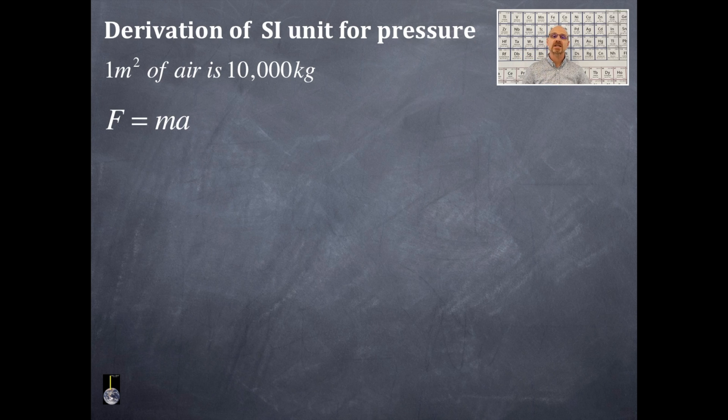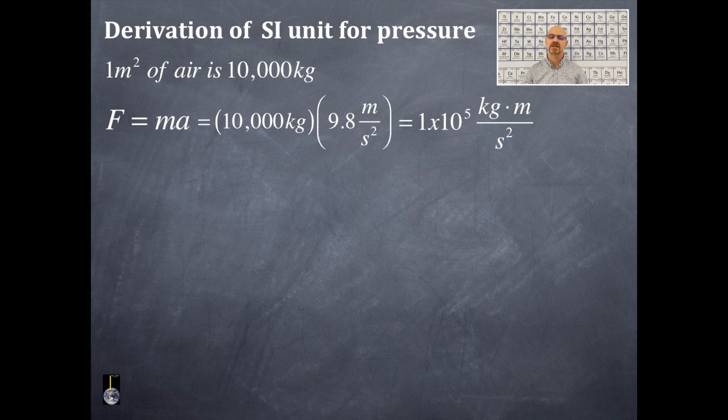From your physics course, you should know the following. Force is equal to the mass times the acceleration. The mass is 10,000 kilograms. The acceleration due to gravity is 9.8 meters per second per second. The product of this is 1×10^5 kilograms times meters divided by seconds squared.